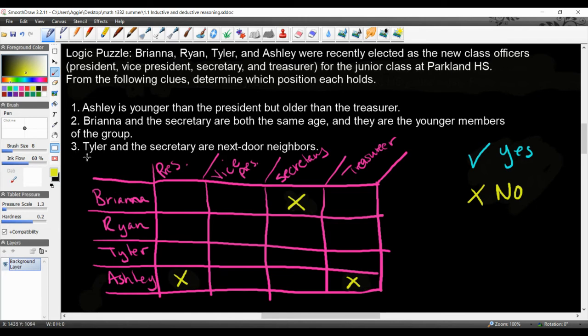Clue number three. Tyler and the secretary are next door neighbors. So again, Tyler and whoever the secretary is are related somehow as neighbors. So Tyler is not the secretary either.